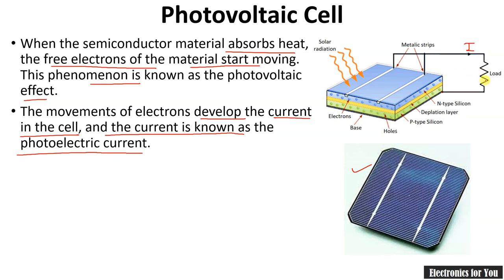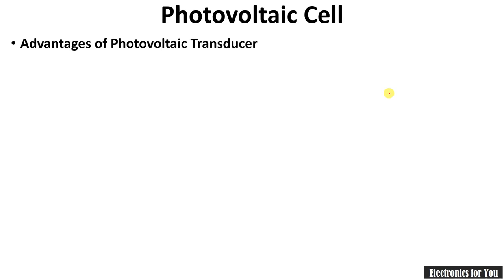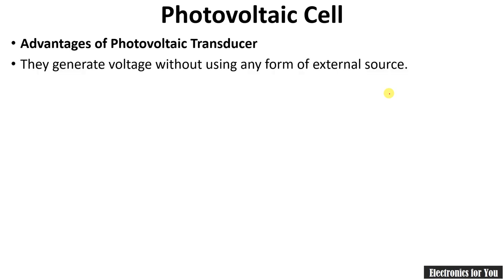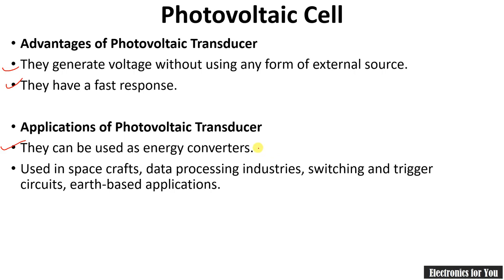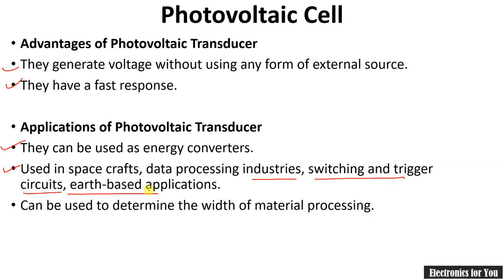The photoelectric current I can be connected to a load or a battery so that the battery can be charged with the help of the photovoltaic cell. Advantages of photovoltaic transducers: they generate voltage without using any external source and have fast response. Applications: they can be used as an energy converter, converting solar energy into electricity. They are used in spacecraft, data processing industries, switching and trigger circuits, and to determine the width in material processing.